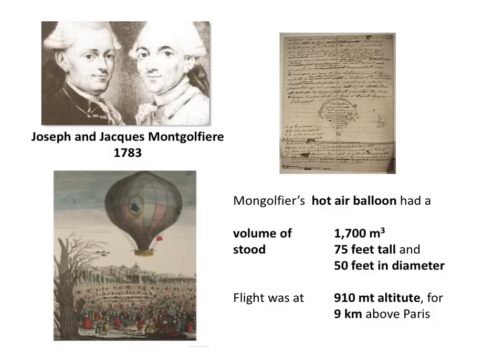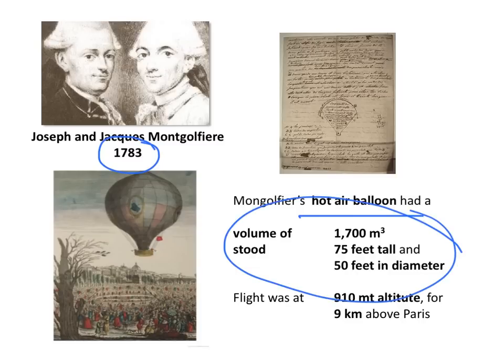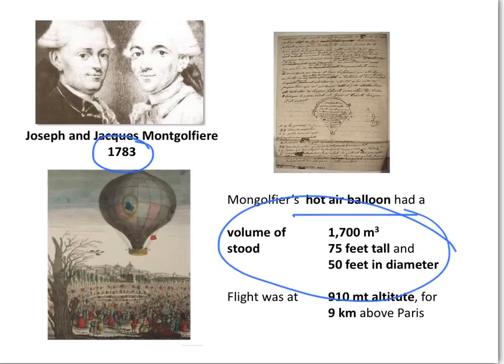The brothers Joseph and Jacques Montgolfier in 1783 invented the hot air balloon. The first idea came to Joseph by observing laundry drying over a fire and creating pockets of hot air. After many smaller samples, they created a balloon of large volume, which for the first time managed to transport passengers up to 900 meters during a 9 km journey around Paris.